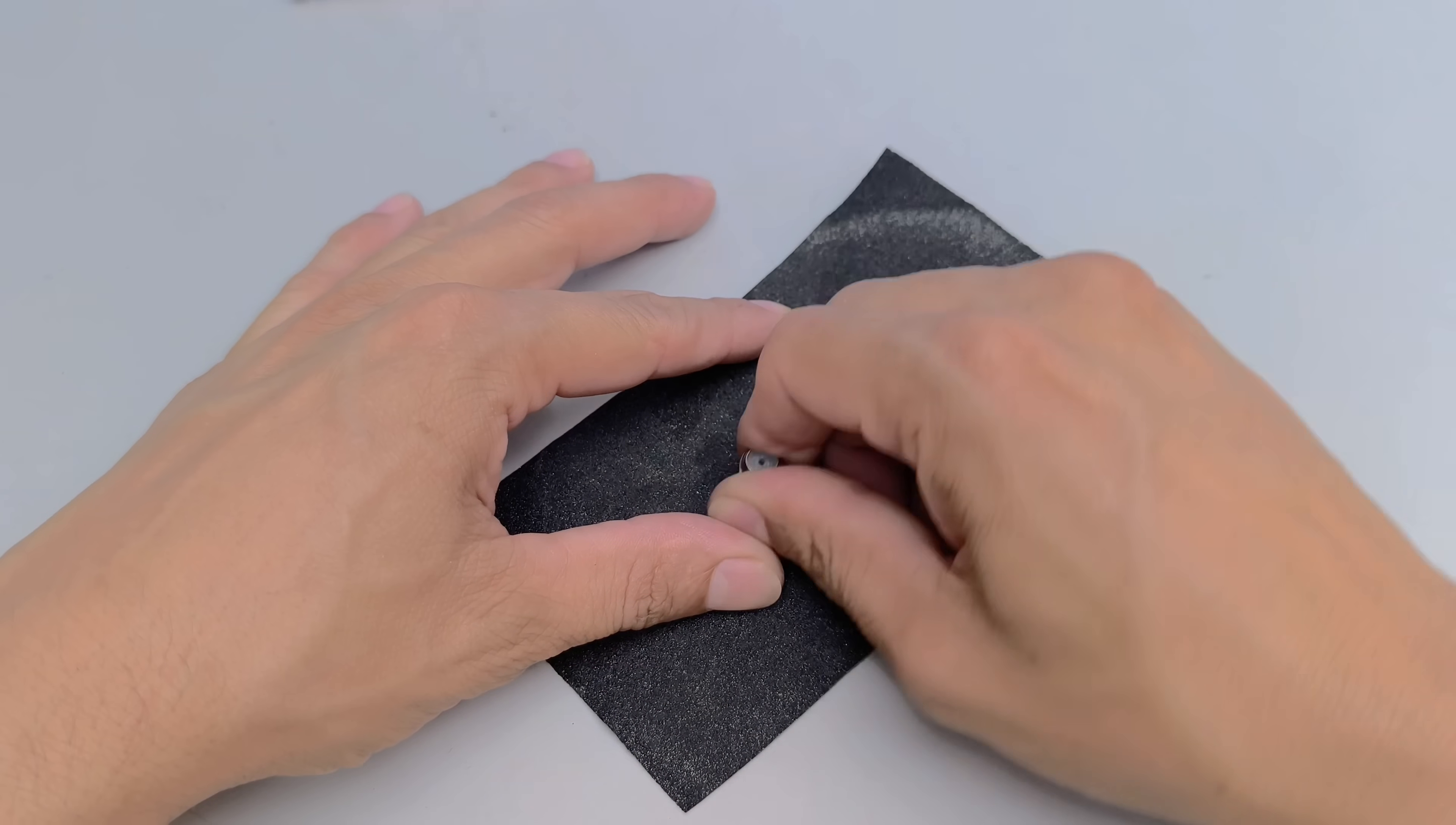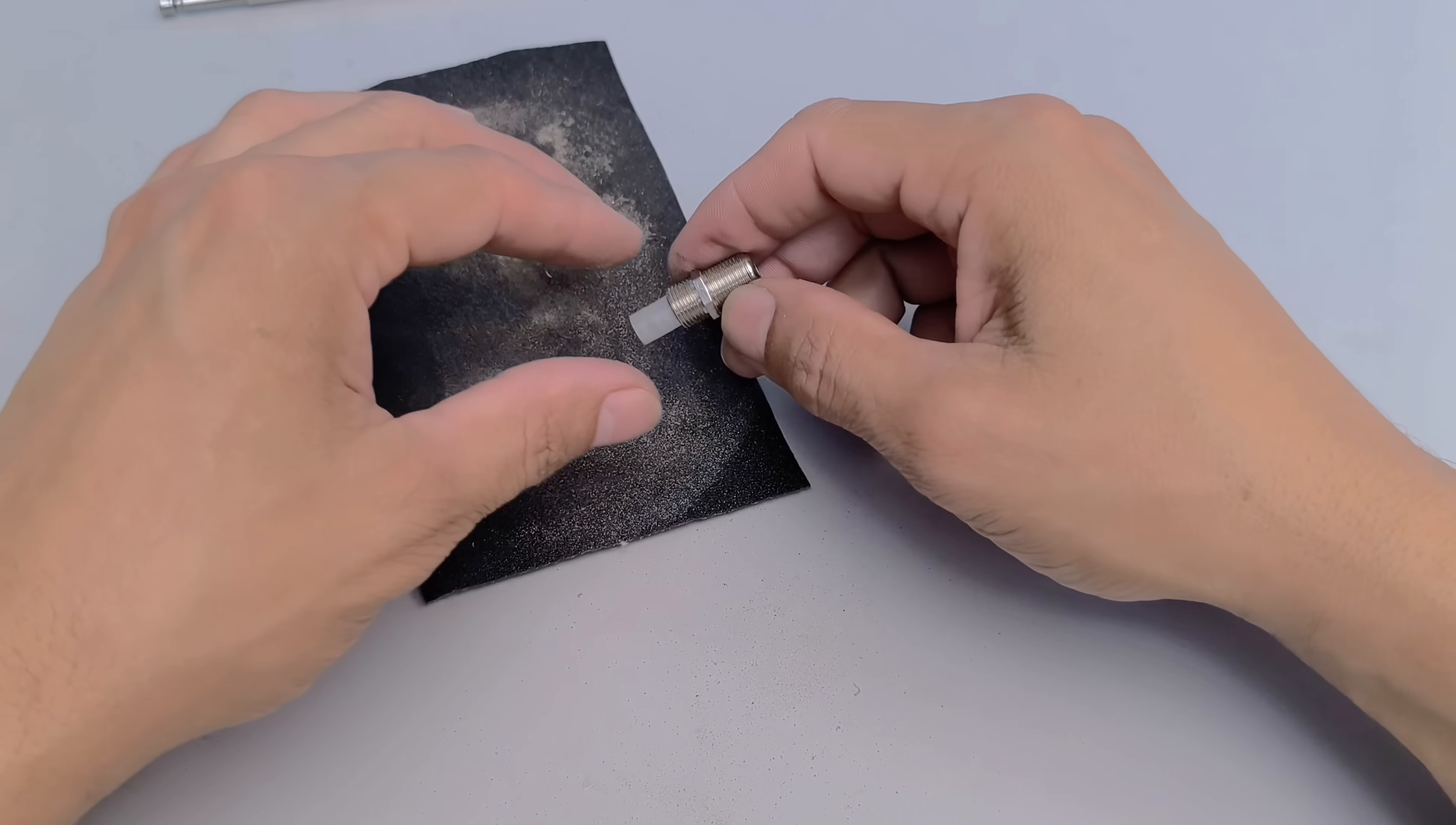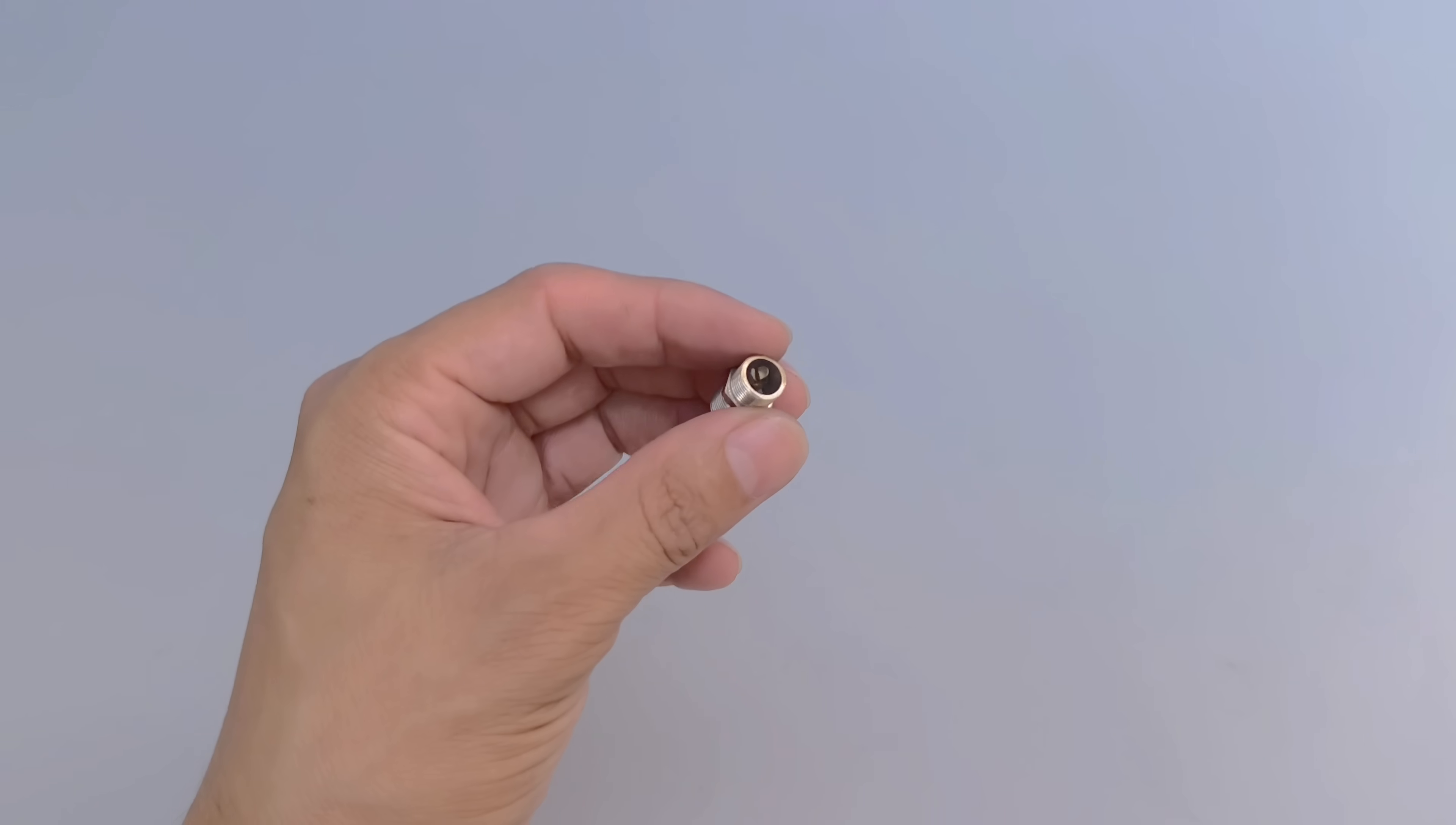Using wet sandpaper, which can be 60, 80, or 100 grit, we wear down one end of the connector. The goal here is to remove some of the outer metal until the central core, which is usually insulated, is exposed and released. This process should be done carefully, applying moderate pressure and constant movements on the sandpaper until the copper or aluminum core becomes accessible.